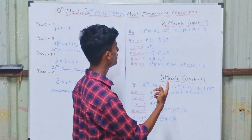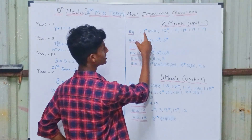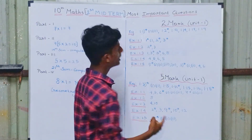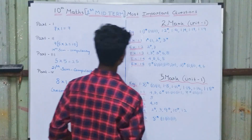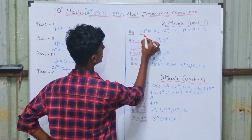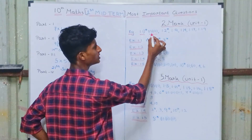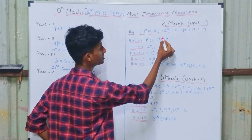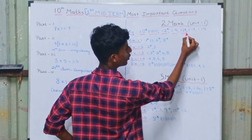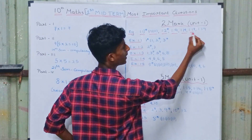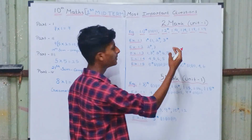If you look at the important questions, we will talk about the sums. If you look at the star questions, you must learn about them — these are very important questions. If you look at examples 1.1, 1.2 subdivision, 1.3 subdivision, and 1.2, 1.9, 1.14, 1.17, 1.19 — these are important two-mark examples.